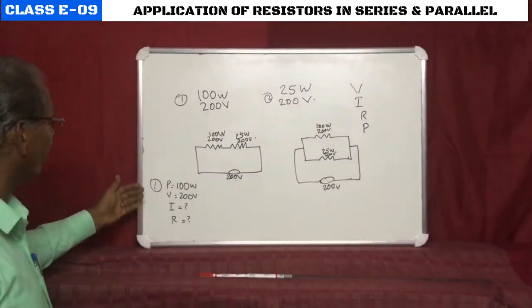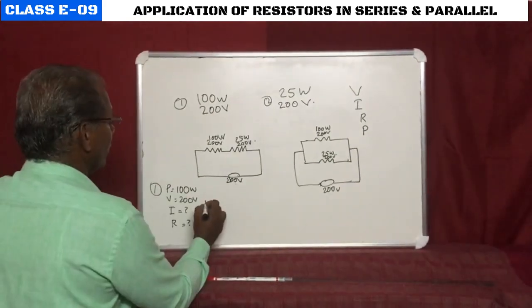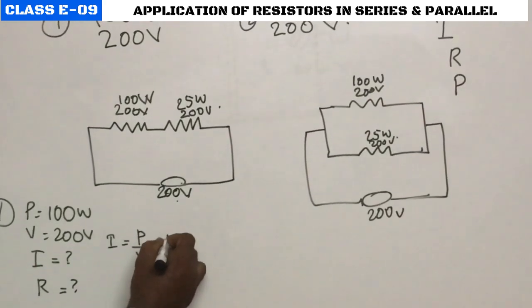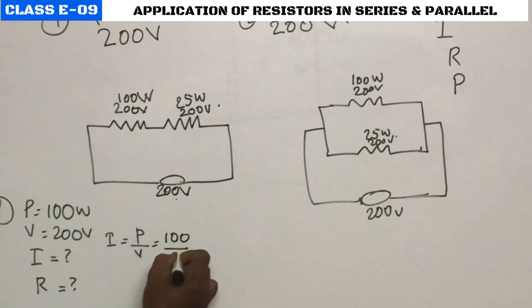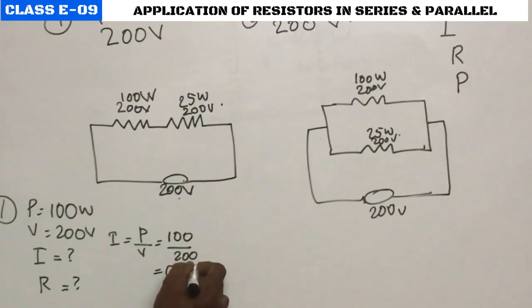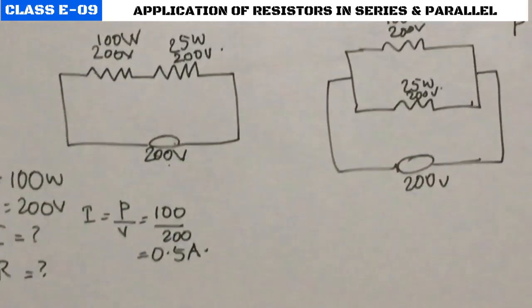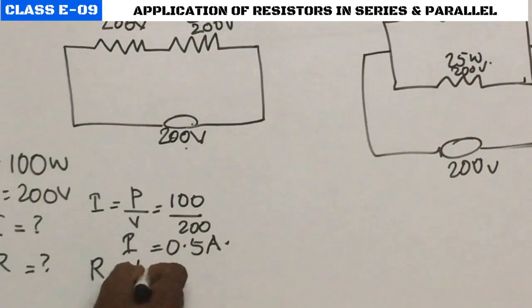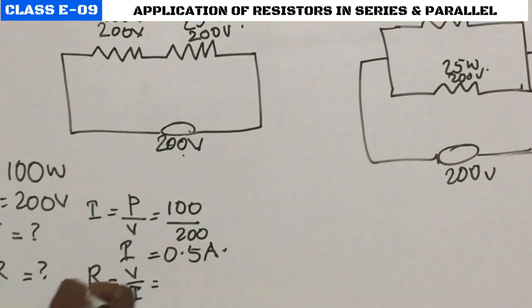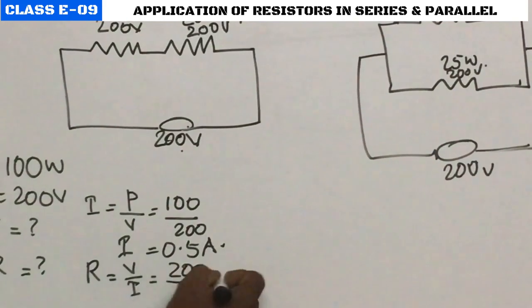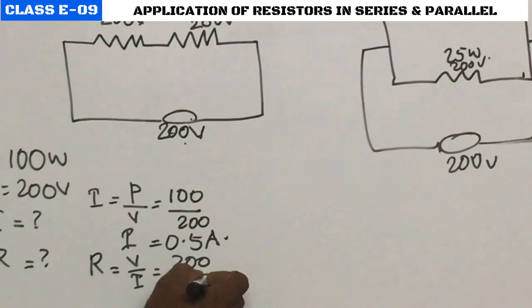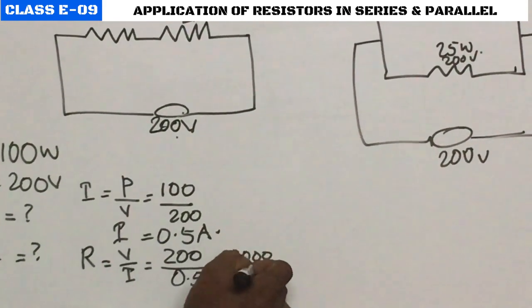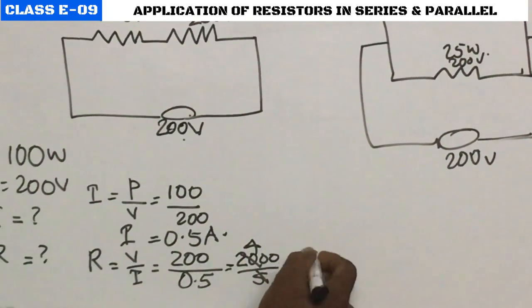Current I = P/V = 100/200 = 0.5 ampere. Resistance R = V/I = 200/0.5 = 400 ohm. So for bulb one, the values derived from its rated specifications are: V = 200V, I = 0.5A, R = 400 ohm, P = 100W.